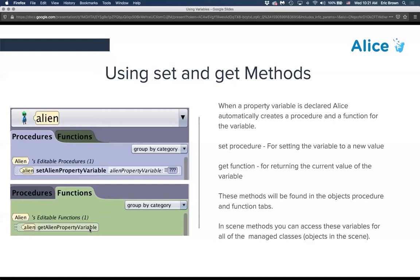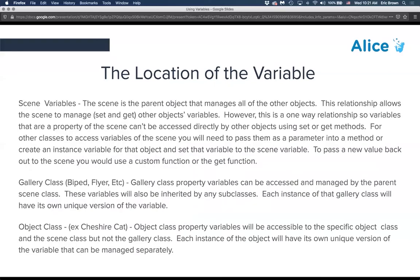To revisit variable location: the scene is the parent object that manages all other objects. This relationship allows the scene to manage, set, and get other objects' variables, but it is a one-way relationship. Variables set at a lower level cannot be accessed directly at the scene level. For other classes to access scene variables, you will need to pass them as parameters, just as we discussed with passing data from the scene level into procedures.